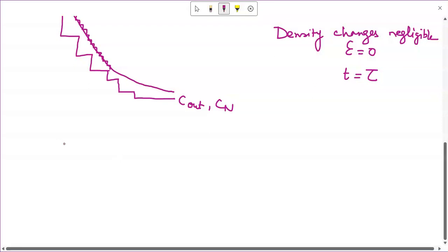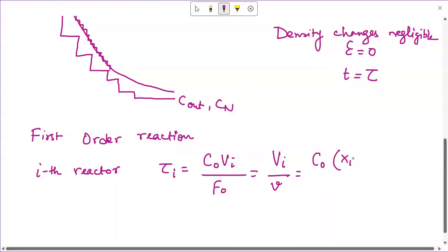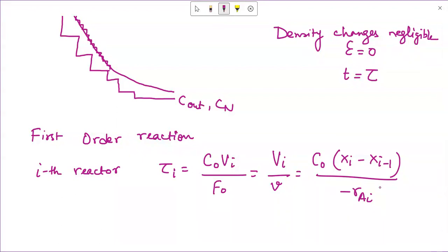Now, let us consider a first-order reaction. About the ith reactor, we are going to first place our performance equation. For the ith reactor, tau I will become equivalent to C0 VI by F0. That is again equals to capital VI by V. Capital VI is the volume of the ith reactor and small v is the volumetric feed rate. This can be written as C0 XI minus XI minus 1 by minus RAI. This is the basic performance equation for the mixed-flow reactor. In case you are not aware of it, I suggest you to go through the other lecture videos that I have created for studying the mixed-flow reactor, steady-state mixed-flow reactor performance equation.